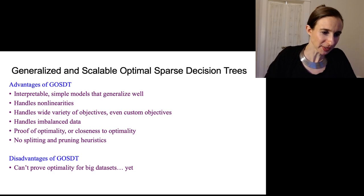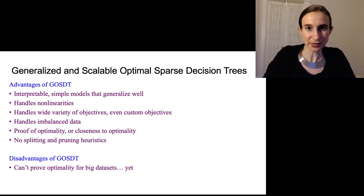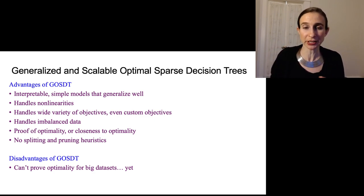Okay, so some advantages of GOSDT: it's interpretable, it produces simple models that generalize well, it handles nonlinearities, it handles a wide variety of objectives even custom objectives that the user can put in themselves. It also handles imbalanced data really well because it's solving things to provable optimality. And again, it has a proof of optimality or closeness to optimality so that if you stop it early you know kind of how close to optimal you were. And it doesn't use splitting and pruning heuristics.